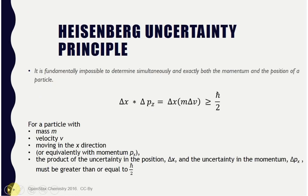The Heisenberg Uncertainty Principle states that it is impossible to know both the momentum and position of an electron simultaneously. We can find out where it is, or we can look at how fast it's going — you cannot measure both at the same time. The key definition is simply that you cannot find both the location and speed of an electron.